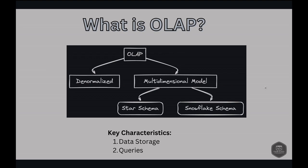Next is queries. OLAP databases are optimized for complex queries and aggregations. Queries involve lots of data but they return aggregated and summarized results. OLAP is used in data warehousing and business intelligence applications — for example, analyzing sales trends, forecasting, and budgeting.